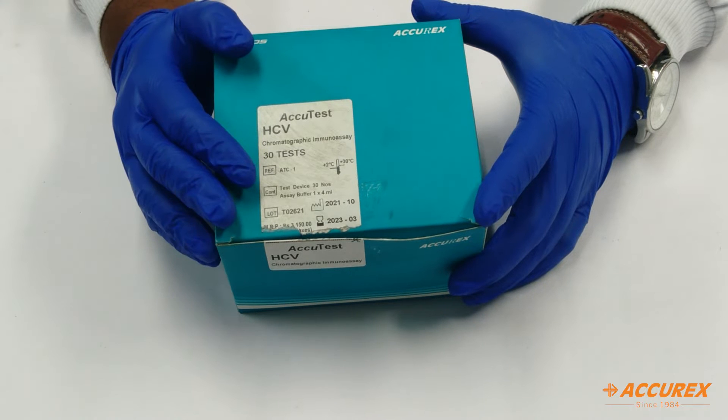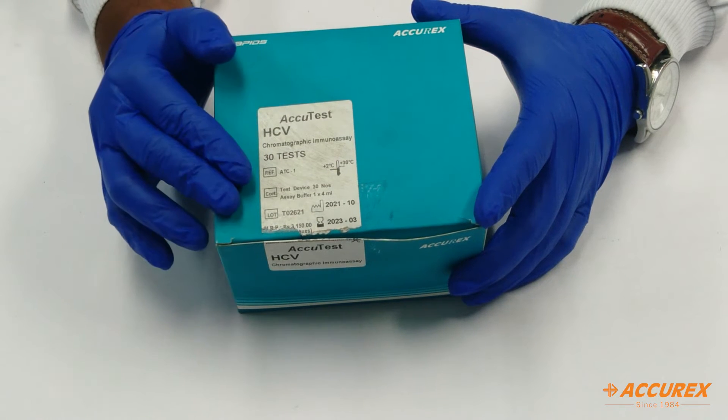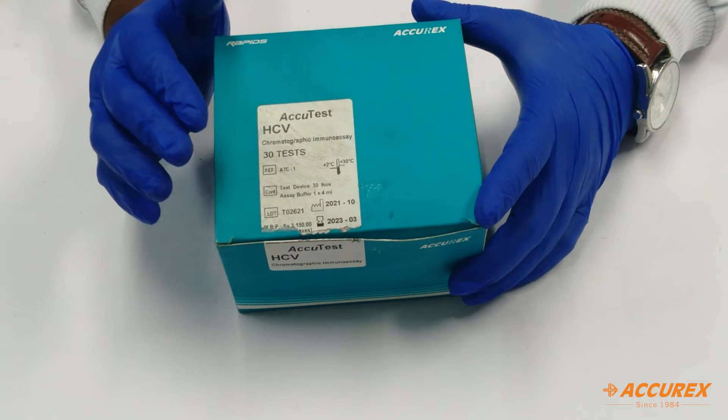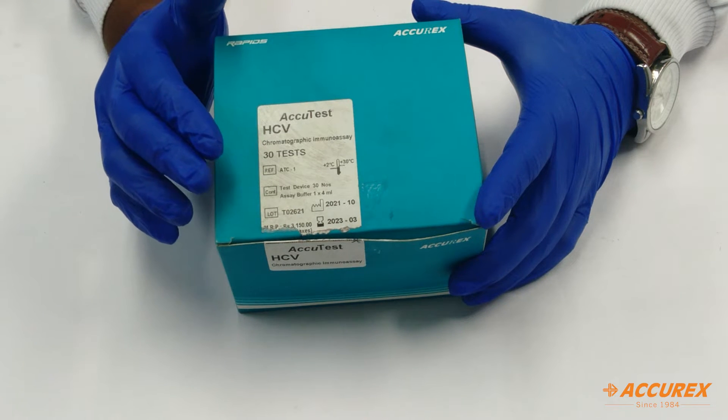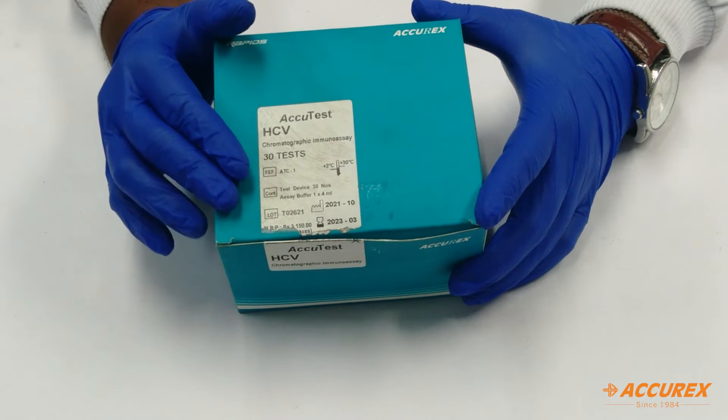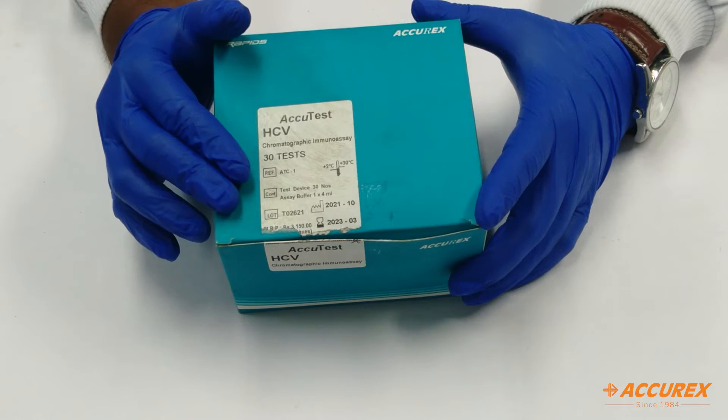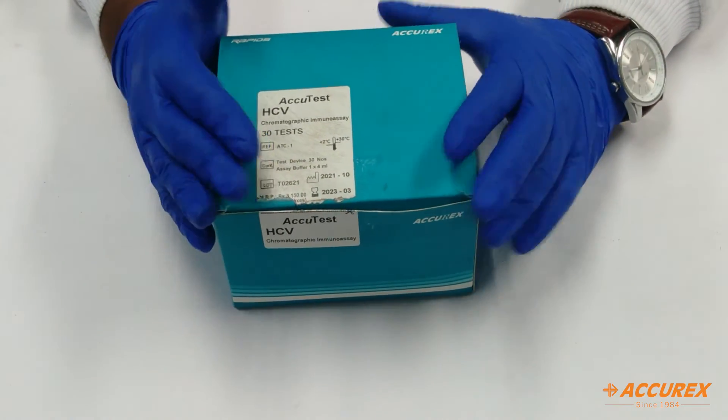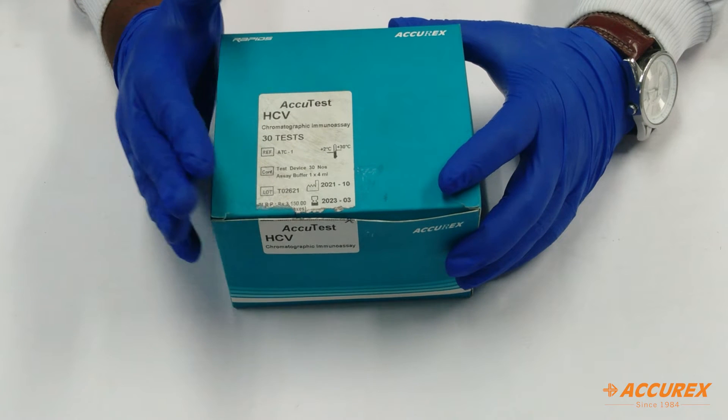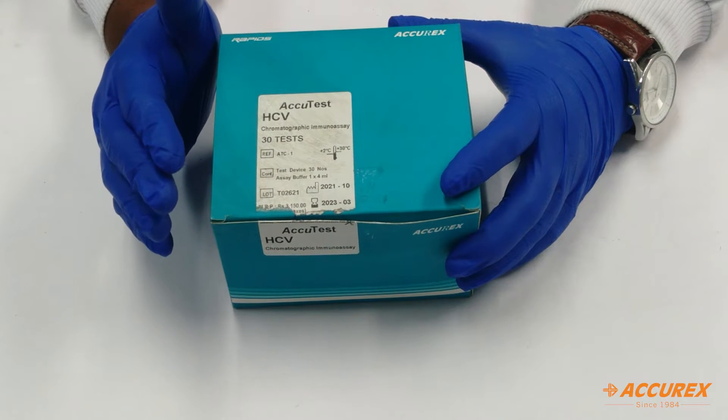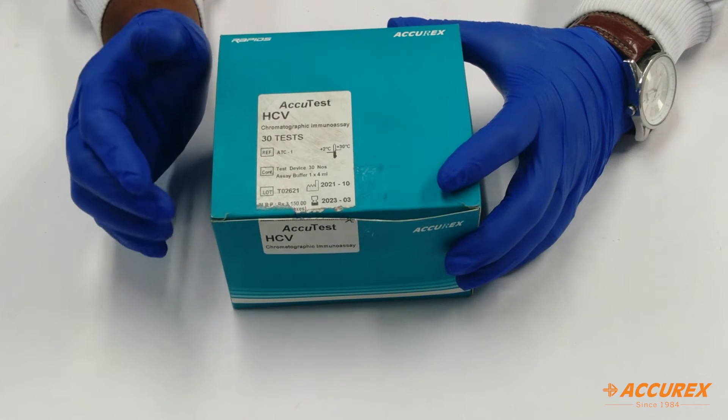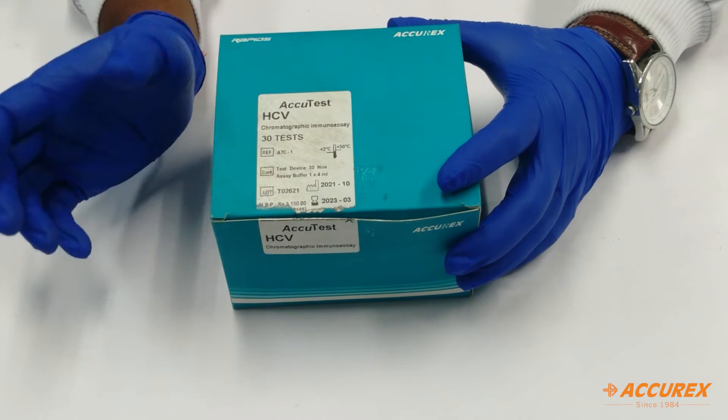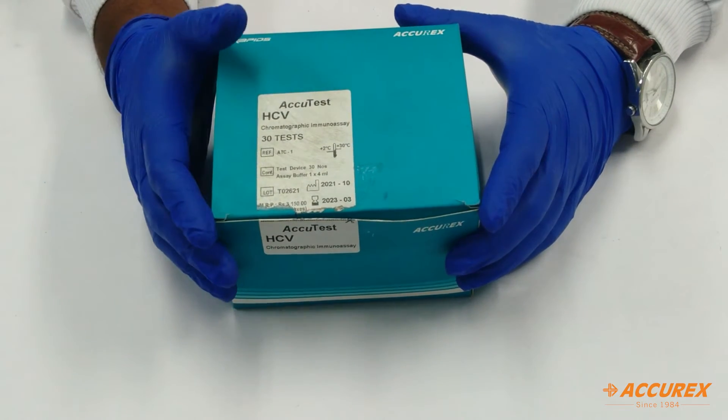What comes inside the box? Before that, we'll see what precautions need to be taken and how to handle the product before testing. How to handle the product is simple: store the kit at 4 to 30 degrees Celsius. When you are going for testing, bring the card to room temperature. For the sample, you need to handle it with gloves since it is infectious.